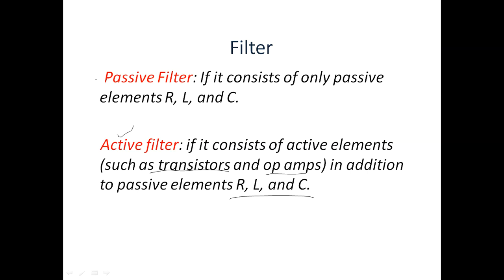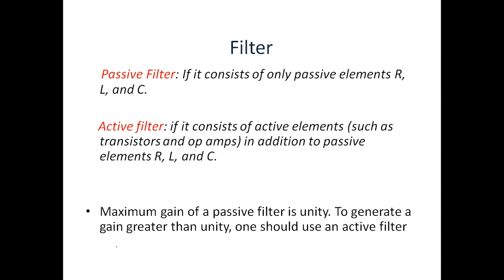Now, which filter is used for which purpose? If we want a maximum gain of unity (i.e., one), we will use a passive filter. If we want a maximum gain greater than unity, we will use an active filter. So the maximum gain of a passive filter is unity, and to generate a gain greater than unity one should use an active filter.